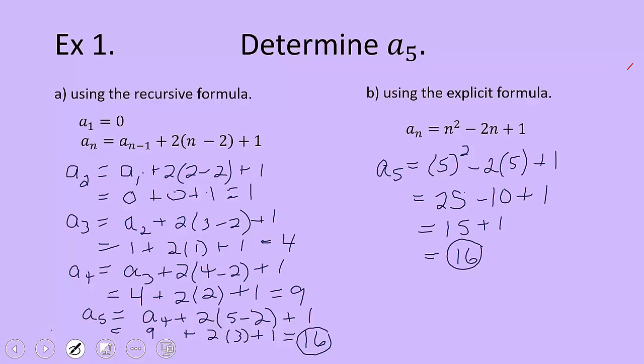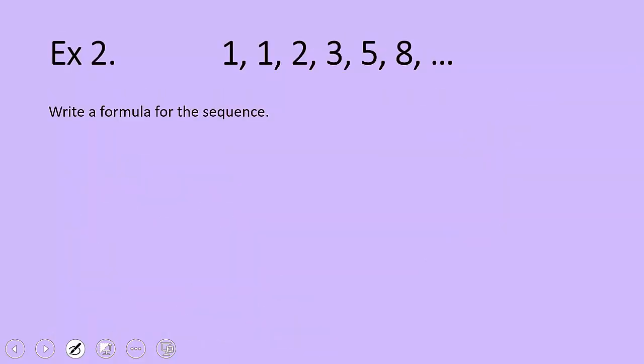Let's try another problem. New sequence to look at: 1, 1, 2, 3, 5, 8. And our job is to write a formula for the sequence. Now notice it didn't specify what type of formula. So let's choose whichever type makes the most sense to us. Take a look at the pattern. See if you can figure it out.